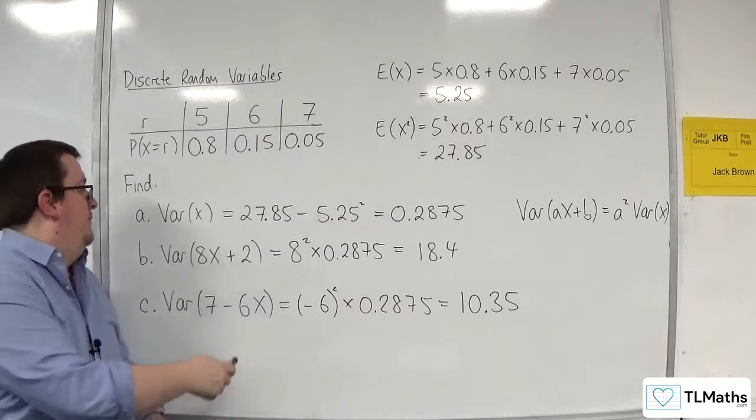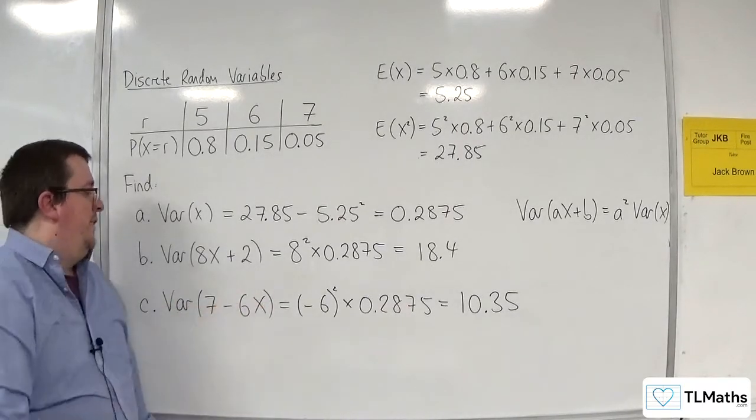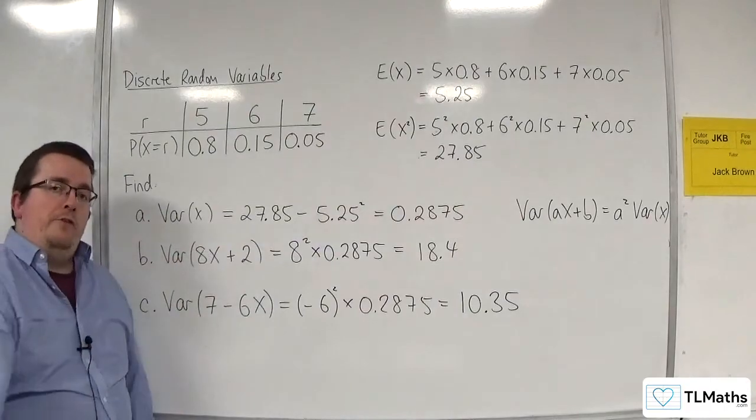So that's how we can find var of 8x plus 2, or var of 7 take away 6x, given the value of var of x.